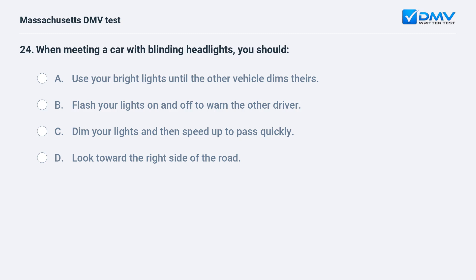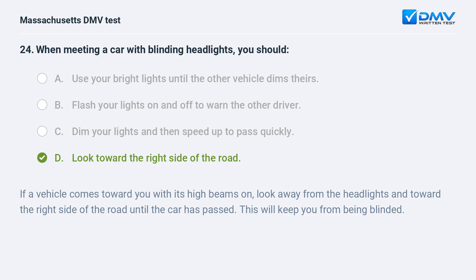When meeting a car with blinding headlights, you should: a. use your bright lights until the other vehicle dims theirs. b. flash your lights on and off to warn the other driver. c. dim your lights and then speed up to pass quickly. d. look toward the right side of the road. Answer: d. If a vehicle comes toward you with its high beams on, look away from the headlights and toward the right side of the road until the car has passed. This will keep you from being blinded.